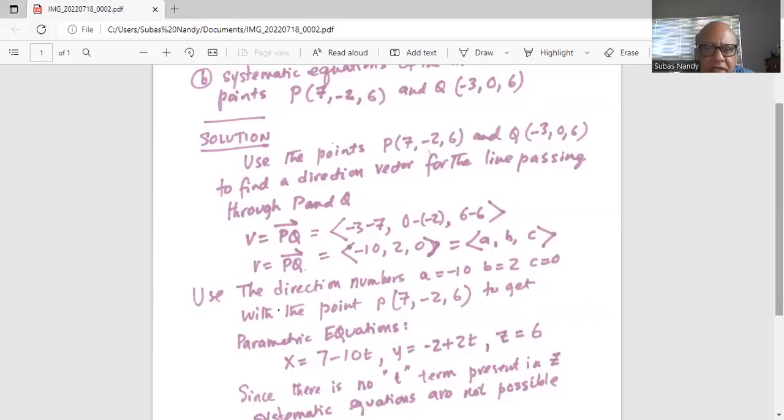And for z is z1 plus C t. Remember, C is 0, z is equal to z1, which is equal to 6.